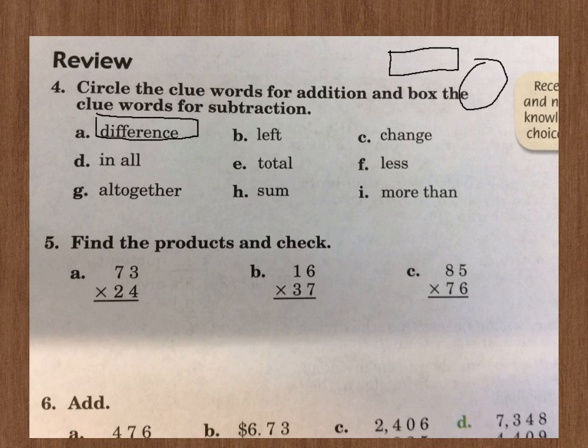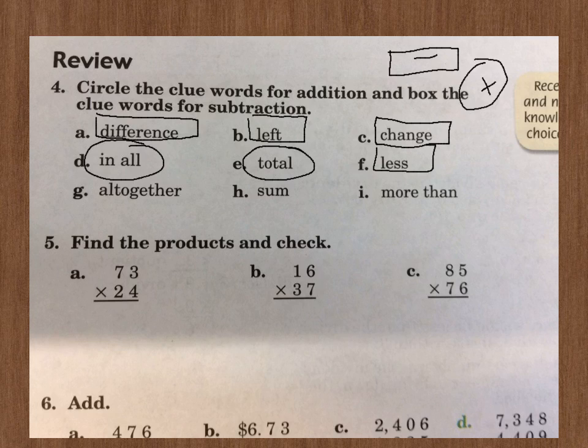B, left. How much would be left? We need to box it. That is subtraction also. Change. To receive how much change, you'd have to subtract. In all boxes so far, all the subtraction problems. Circles would be addition problems. In all. That's when you're adding. When you're adding a couple numbers in all, what's the cost? So we circle D. Same with the total of something, that'd be adding it. So we circle E. F, less, that would be subtraction. We need to box it. Altogether would be addition. Let's circle it. The sum is the answer to addition problem, so we need to circle it. And how much more than something, you'd have to subtract to find out the answer to that, so we box it.